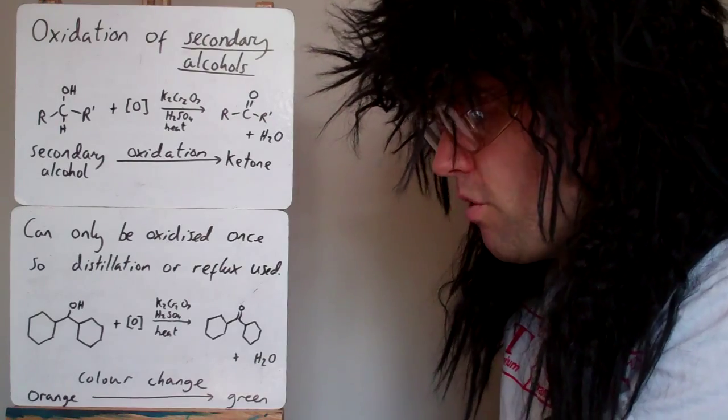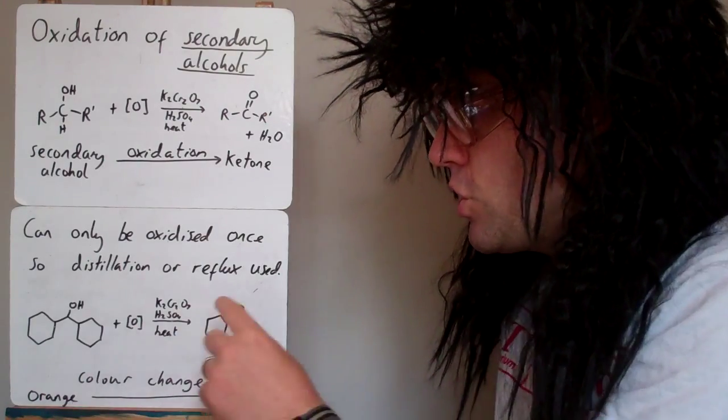Just like before when we saw a primary alcohol, the potassium dichromate goes from orange to green.